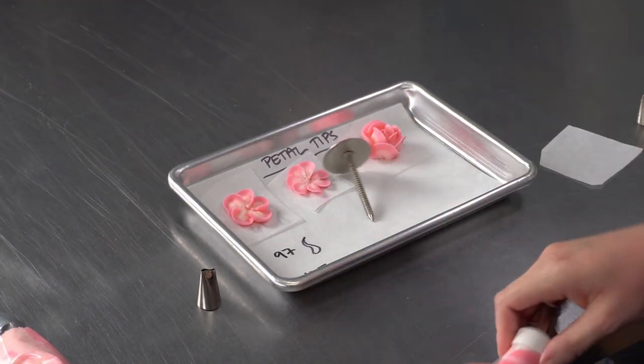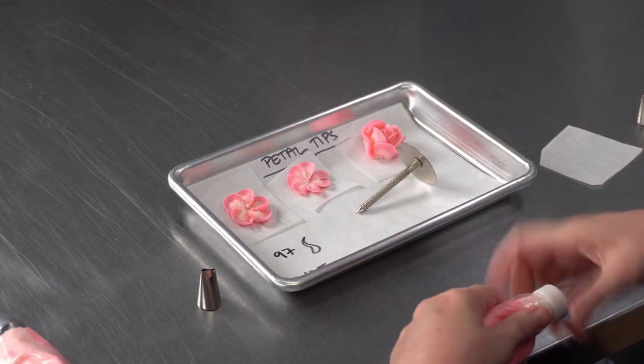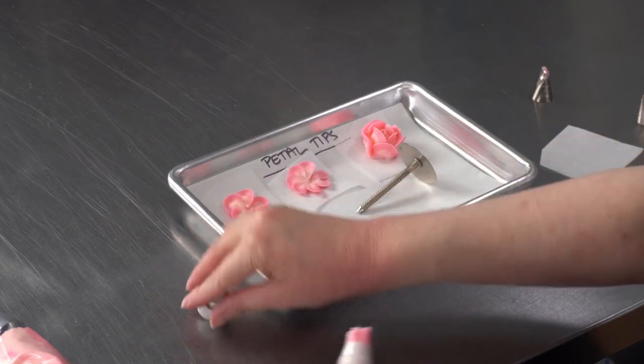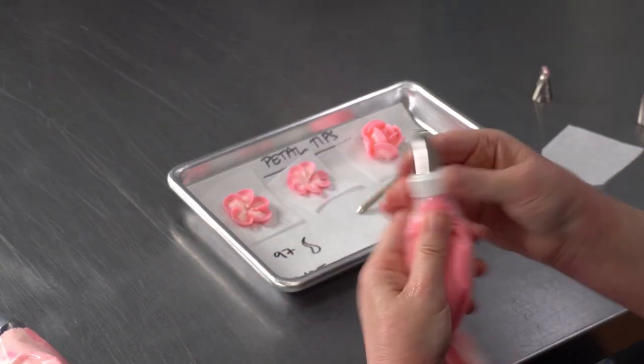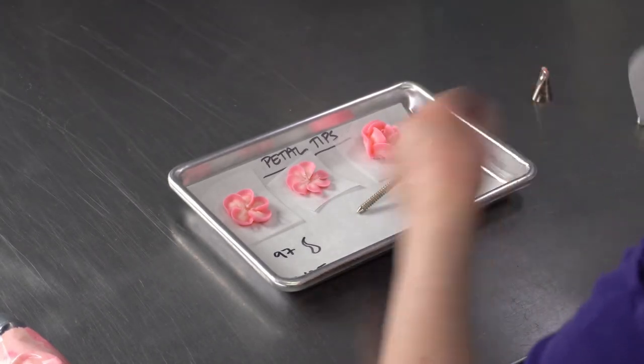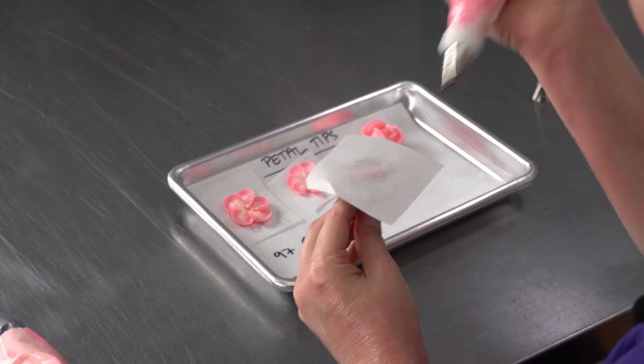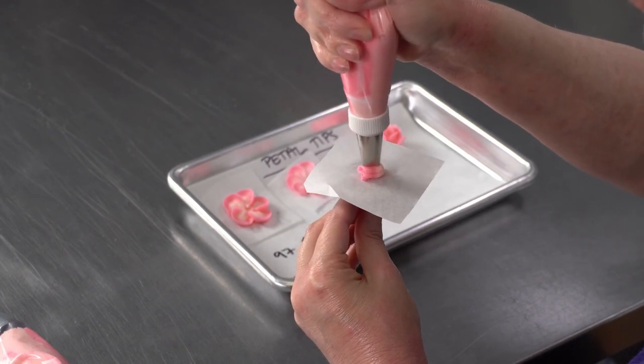And then I'm going to switch to my number 97 and I'm going to pipe another rose so you can see how that looks different. So again, anytime you're doing roses, pipe a nice center.